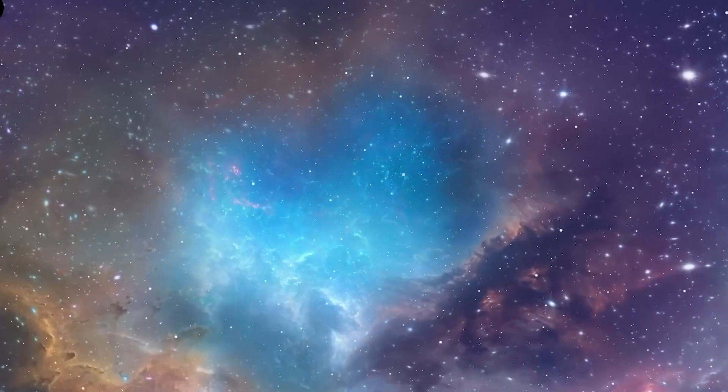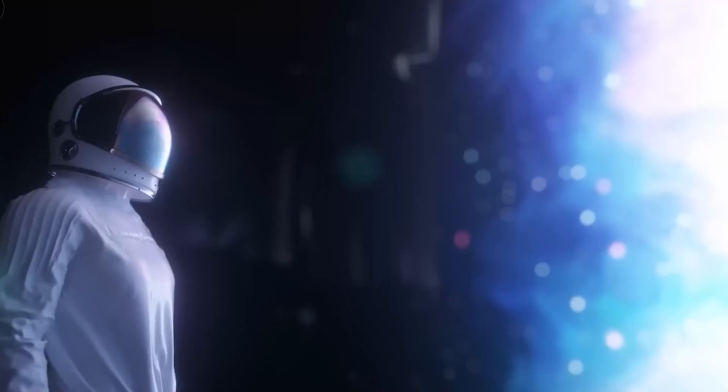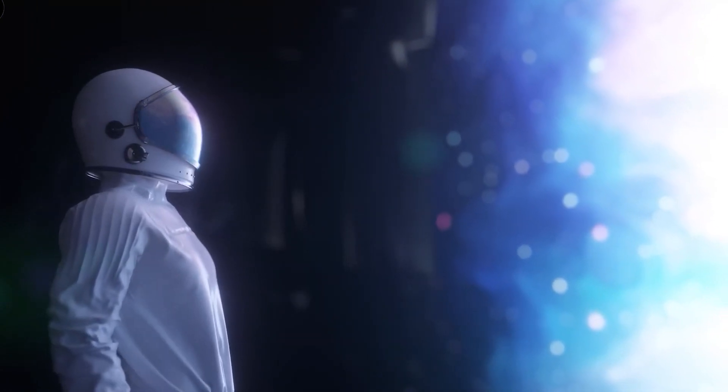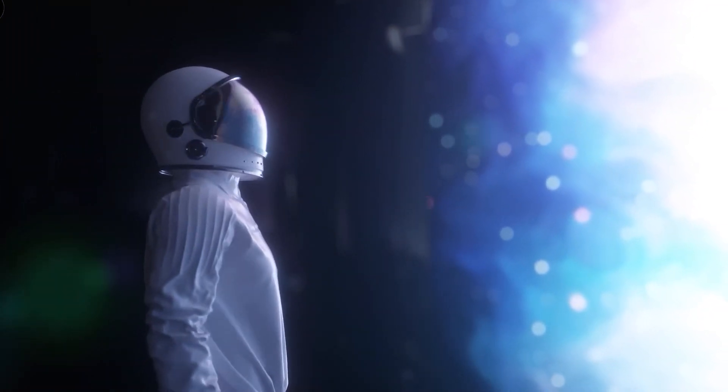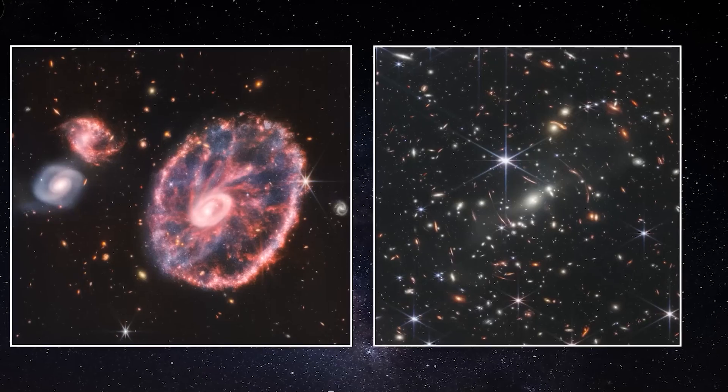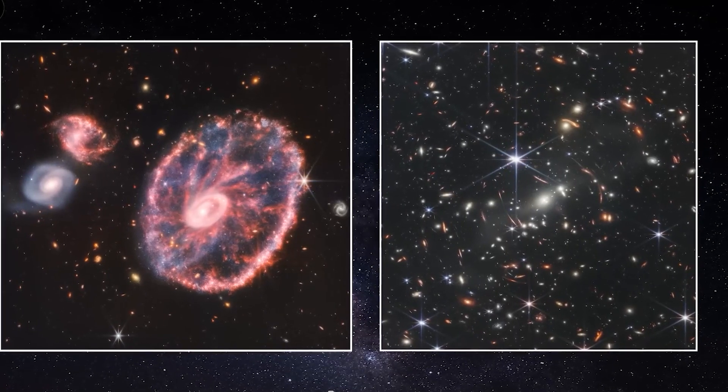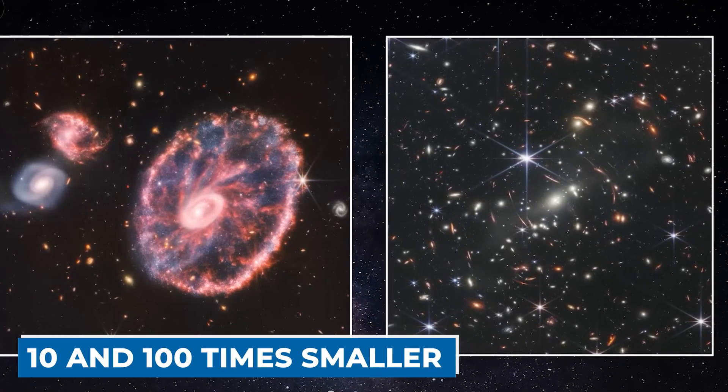If there were such big galaxies so soon after the Big Bang, it would go against the current cosmology model, which is the best way for scientists to explain how the universe works. According to the theory, galaxies grow slowly from very small beginnings at early times, adding that such galaxies were predicted to be between 10 and 100 times smaller.